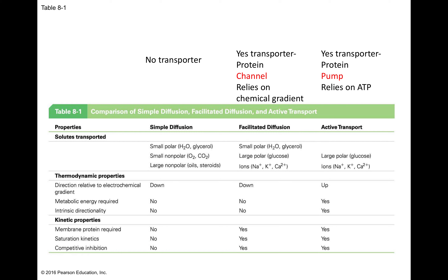Looking at a table here talking about the different kinds of transport across membranes: you can have simple diffusion, where something is at high concentration on one side of the membrane and low concentration on the other side. It's just going through the membrane — not through a specific pore, not regulated transport, and there's no protein involved. In facilitated diffusion, there is a protein transporter involved, and it relies on a chemical gradient — like simple diffusion, except through a specific pore, but still relying on a high-to-low concentration gradient.